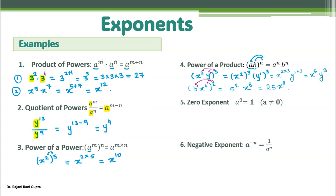Next, the zero exponent rule: if you have any number a with power 0, it is always 1. For example: 10 power 0 is 1; (minus 5 over 3) power 0 is 1; 999 power 0 is 1; 0.5632 power 0 is 1. As long as the number is not 0, any number with power 0 has value 1.